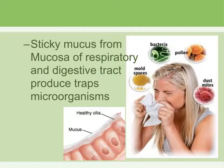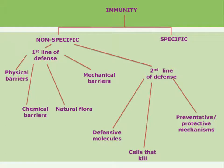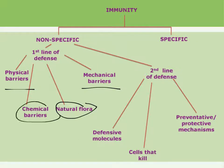Here's a diagram showing the types of immunity. Immunity is divided into nonspecific, which we're talking about now, and specific, which we'll get into later. The first line of defense is to keep pathogens out using physical barriers — mechanical and physical barriers prevent things from getting in — and chemicals produced by the body inhibit growth or kill pathogens.